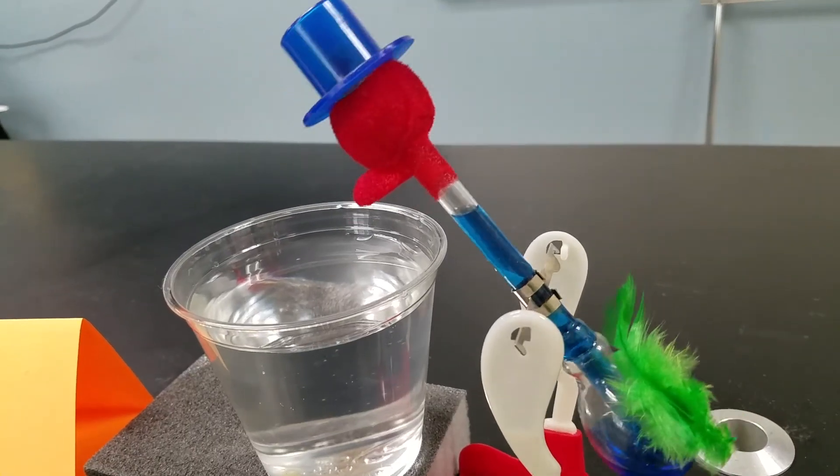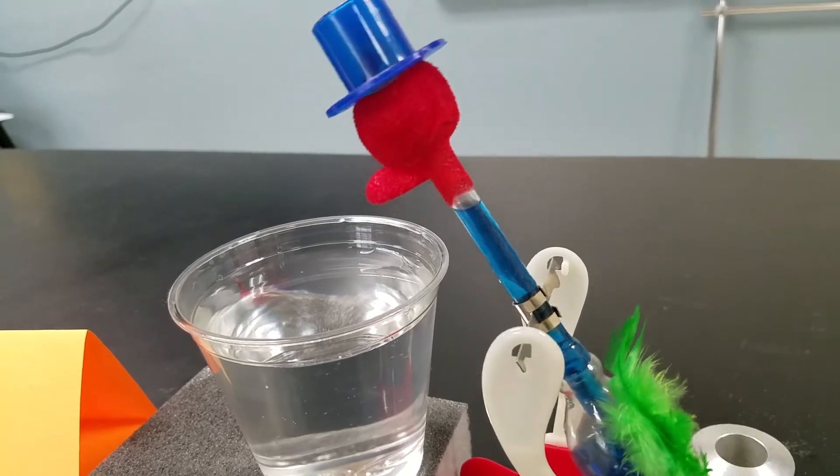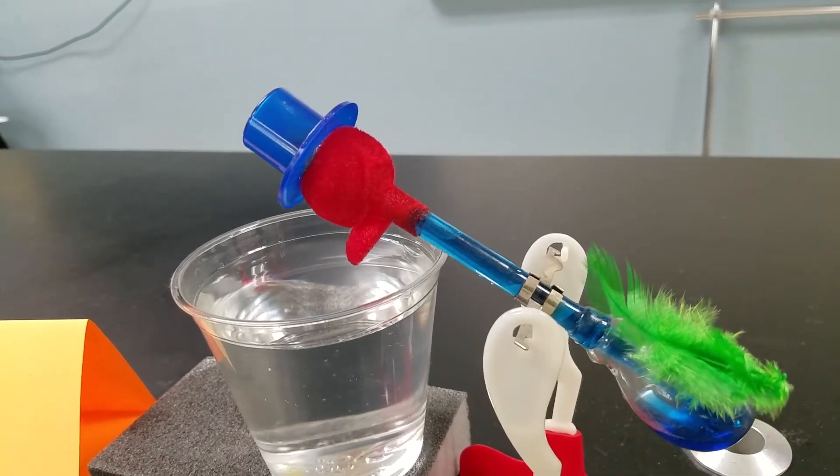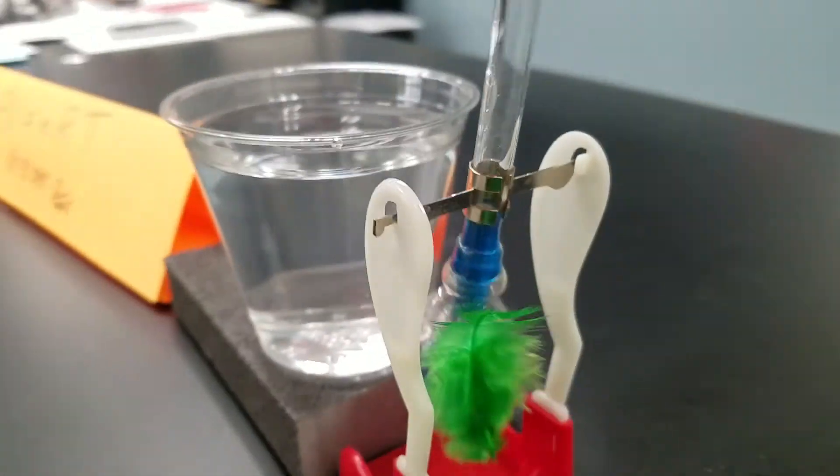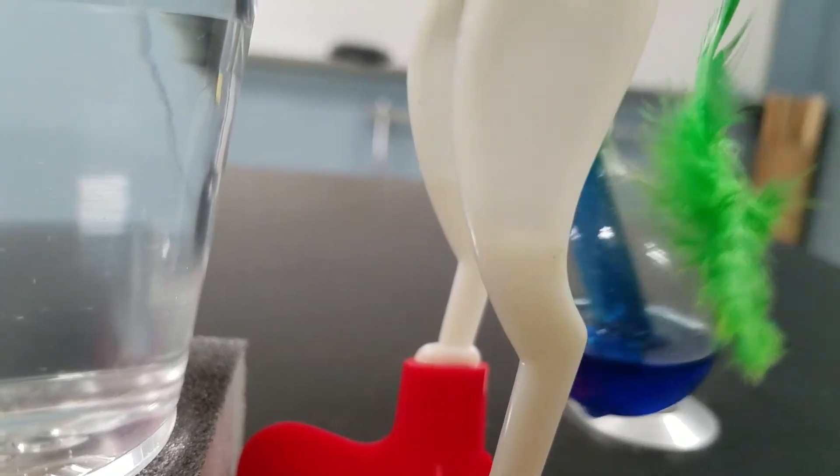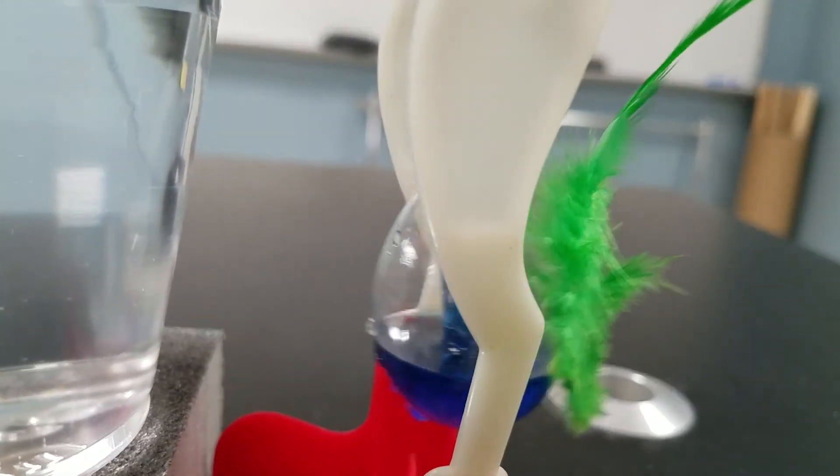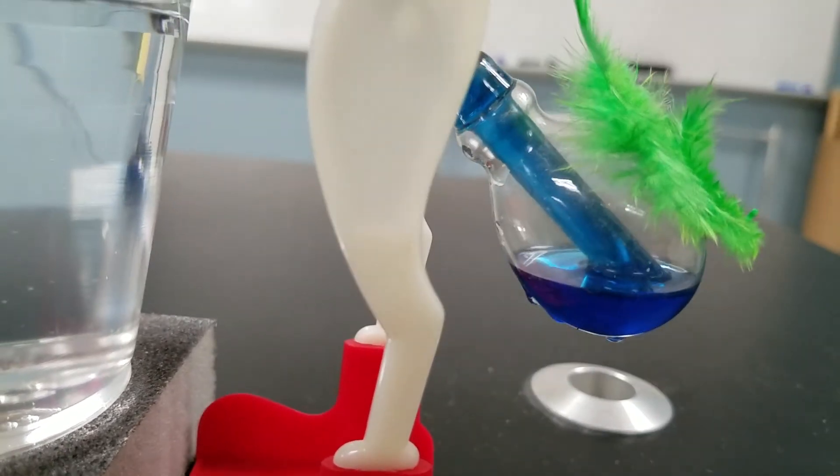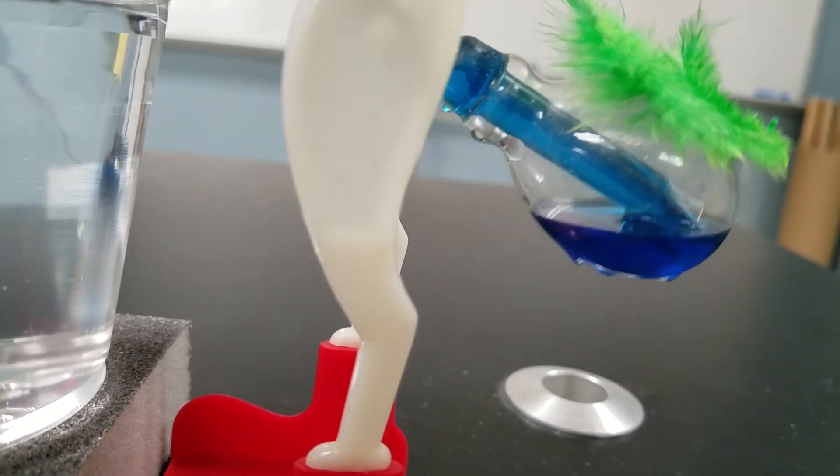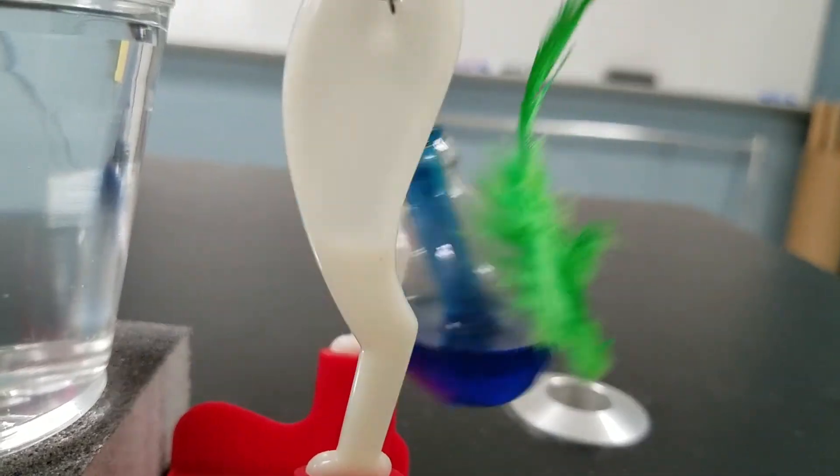So here you see the fluid go higher and higher as it moves until it counterbalances and dips through. And when it does, let me see if we can get a better picture of that tube in the bottom. When it tilts over, that tube comes out of that fluid and it's able to equalize the pressure right there.